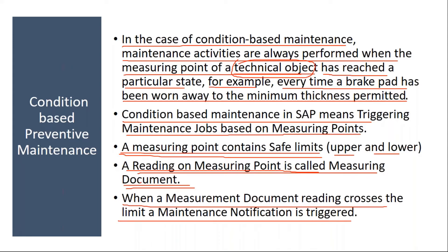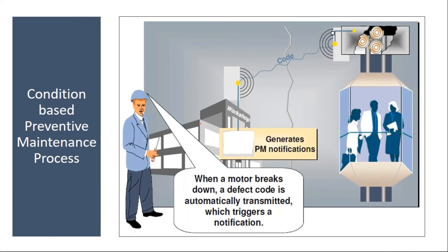When they take the reading, if that reading is not within the allowed limits, the system automatically generates a notification. When a motor breaks down, a defect code is automatically transmitted which triggers a notification. So when the equipment is not in the proper condition, you can automatically generate a notification, which we will see in the system.